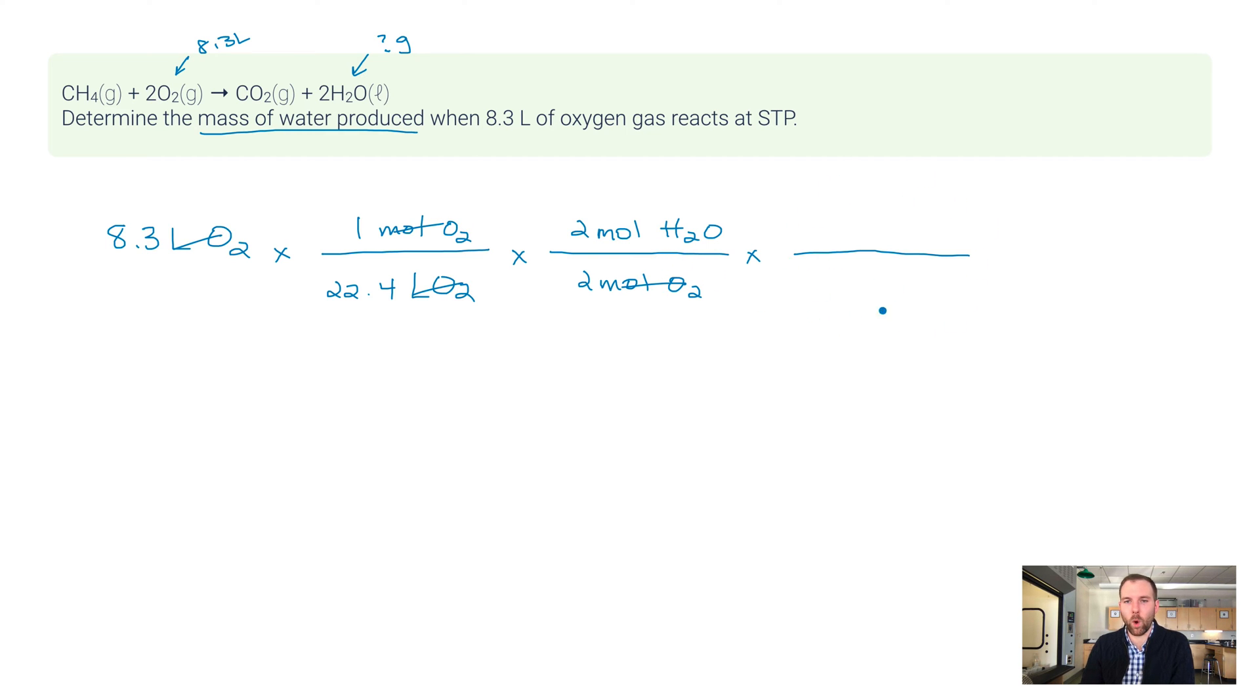That molar ratio is basically a 1 to 1 ratio, 2 to 2 technically but mathematically it doesn't matter. On the bottom here, this is my molar mass of water because I want to go to the mass of water. I don't want to go to a volume, otherwise I'd use that 22.4 again. On the top I want to go to the mass of water, so a mole of water on the bottom has what mass? It's about 18.02 grams of water on the top.